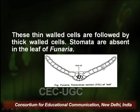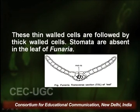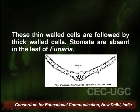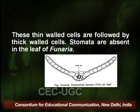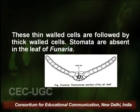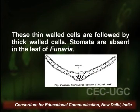Stomata are not found on the leaf of Funaria. Because the wings are one cell thick, gaseous exchange, absorption, and water availability are fulfilled directly through the surfaces of these single cells. There is no special requirement for a stomatal structure, unlike what we have seen in Marchantia and Anthoceros, which are considered more primitive than Funaria.